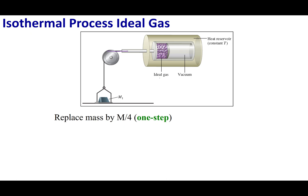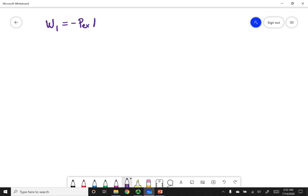There's one other thing I'm going to impart on this process: when I go from volume one to volume two, I'm going to do this in what I call a single step. That means I'm going to have my mass on the ground and in an instant lift the mass up to the full height — it's not going to drag slowly, it goes boom to boom right there in one instantaneous step. To calculate work, we're going to use negative P-external times ΔV. The external pressure is going to be the final pressure that the gas comes to.